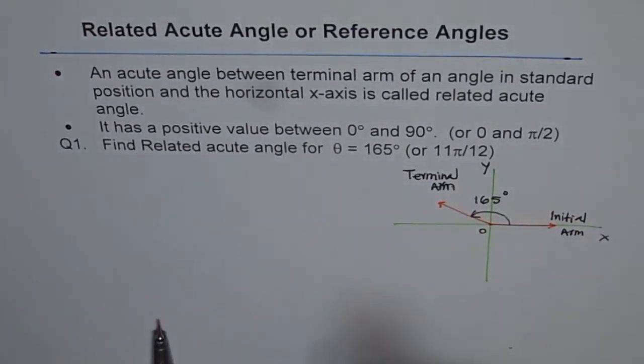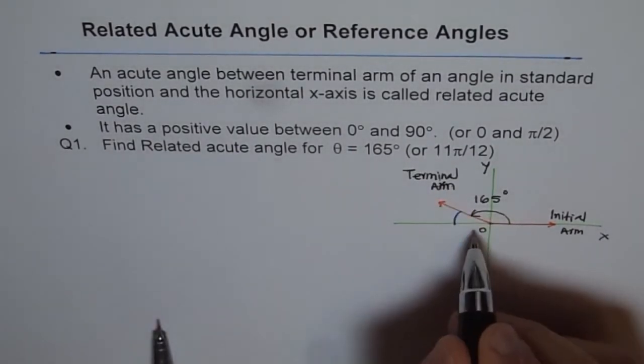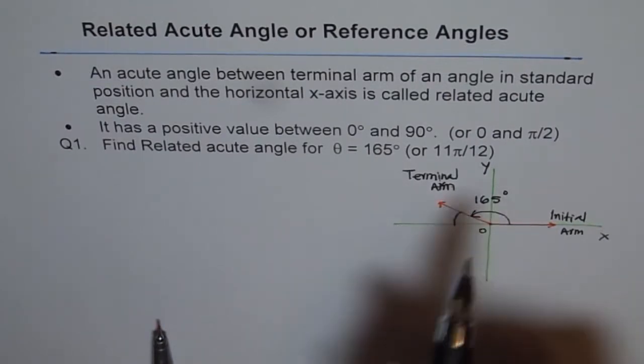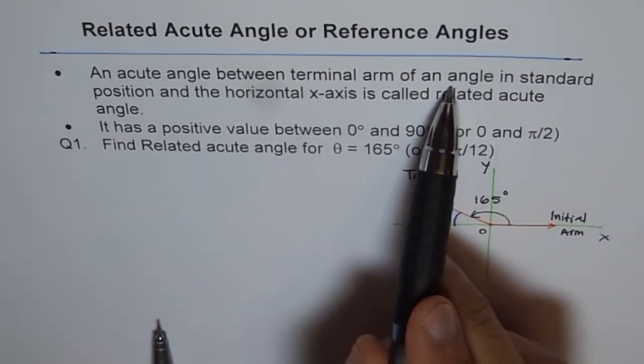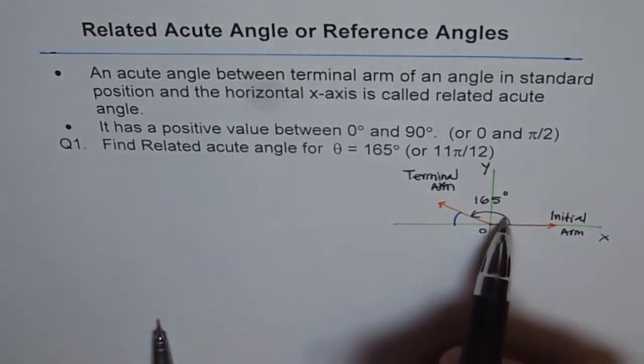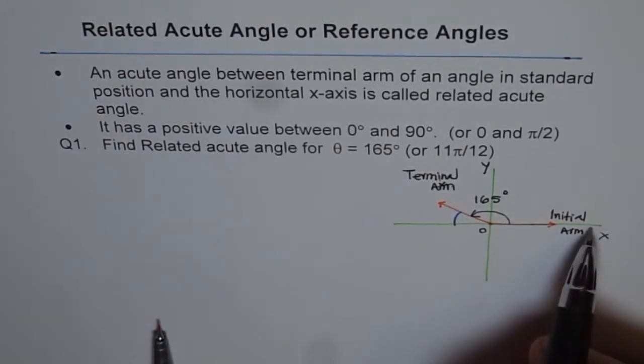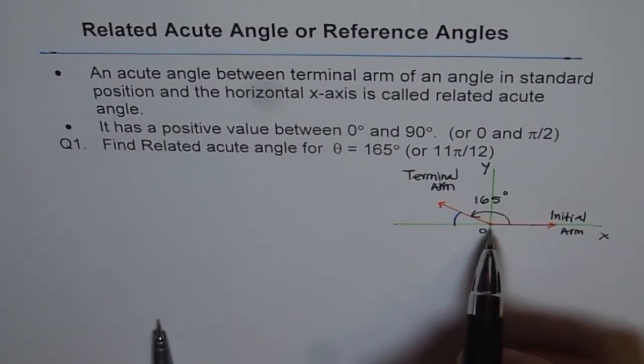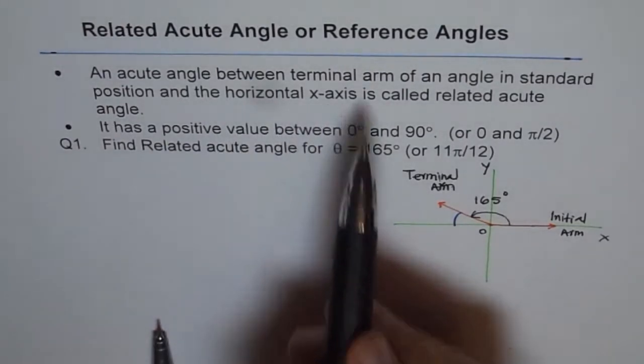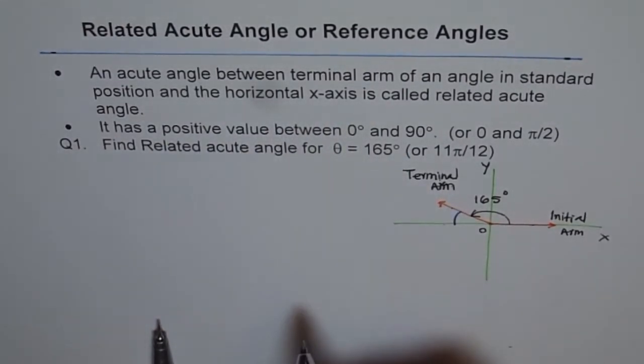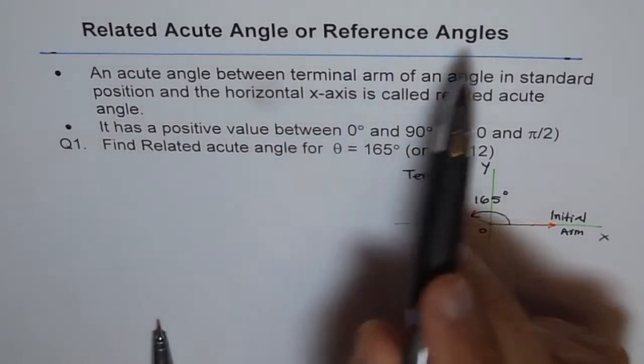Now when we say find related acute angle, then we are trying to find the angle between the terminal arm and the horizontal x-axis. An acute angle between the terminal arm of an angle in standard position - so this is angle in standard position, vertex at 0, initial arm along the x-axis. That is what standard position is. So angle in standard position and horizontal x-axis. So angle between terminal arm and horizontal x-axis. So that is the related acute angle, also called reference angle.